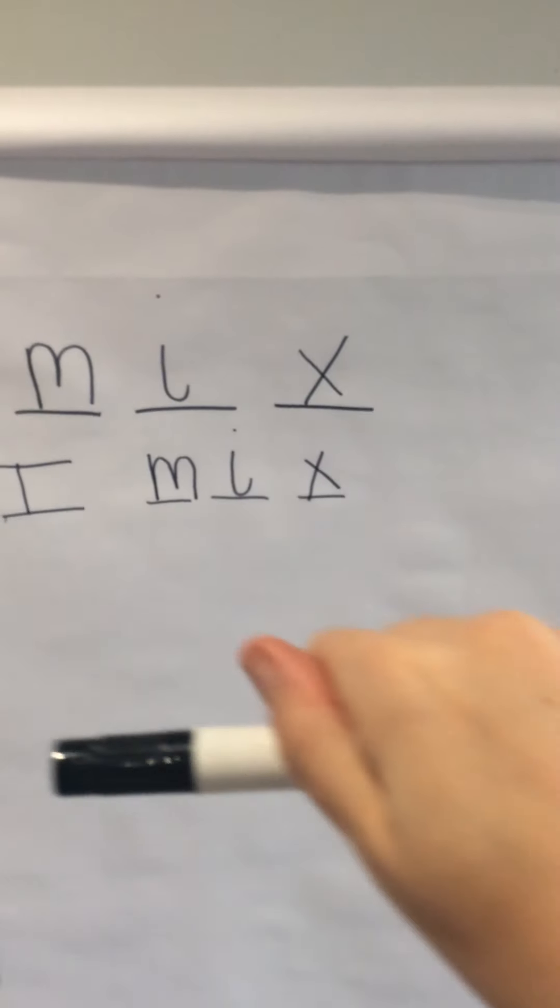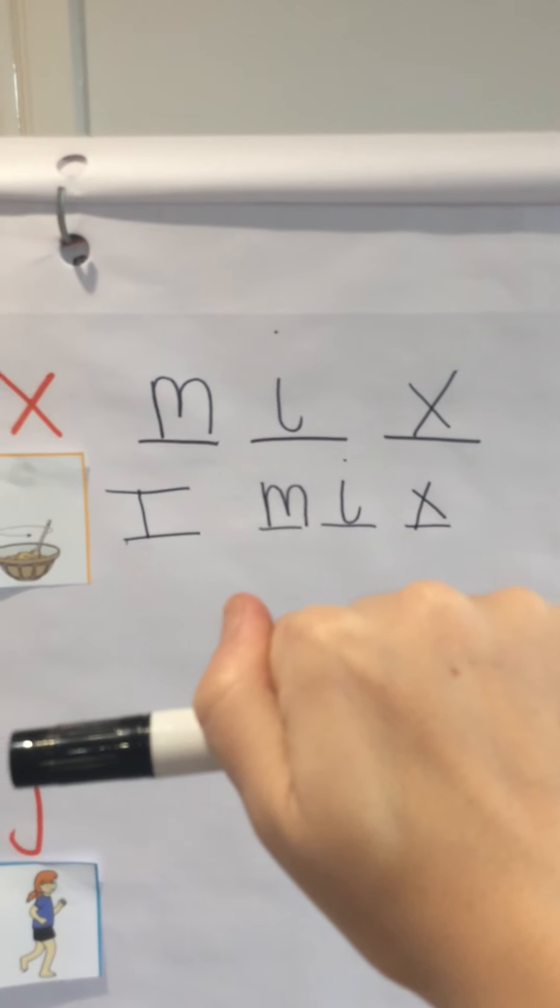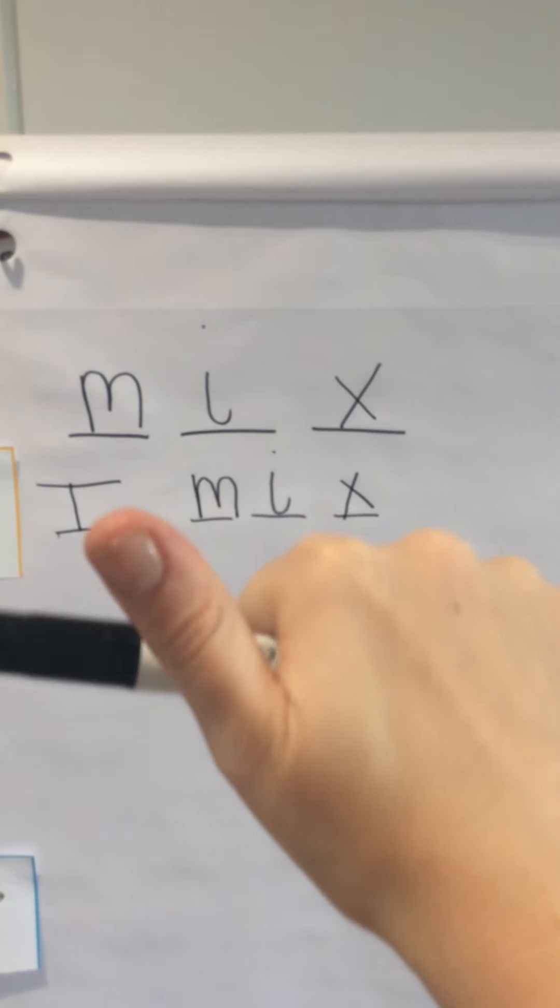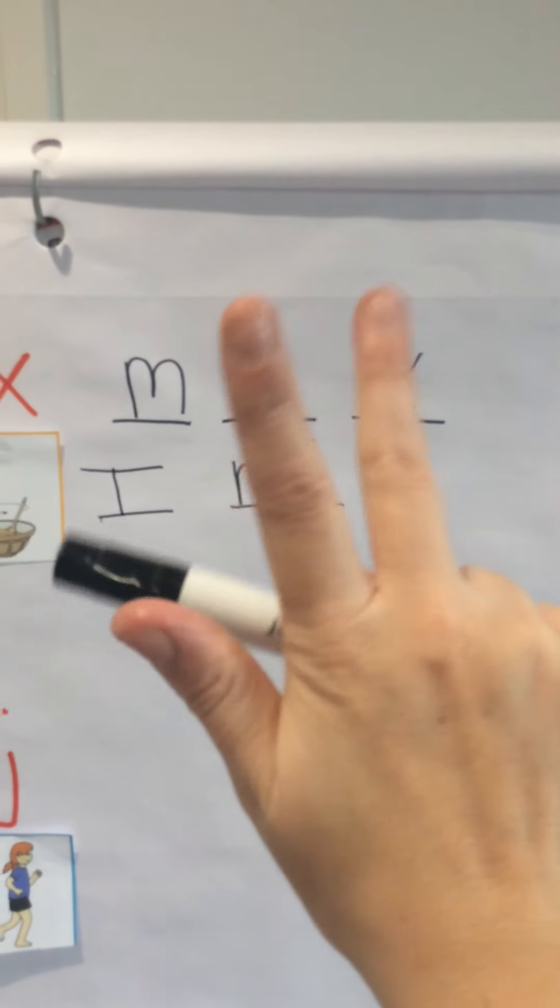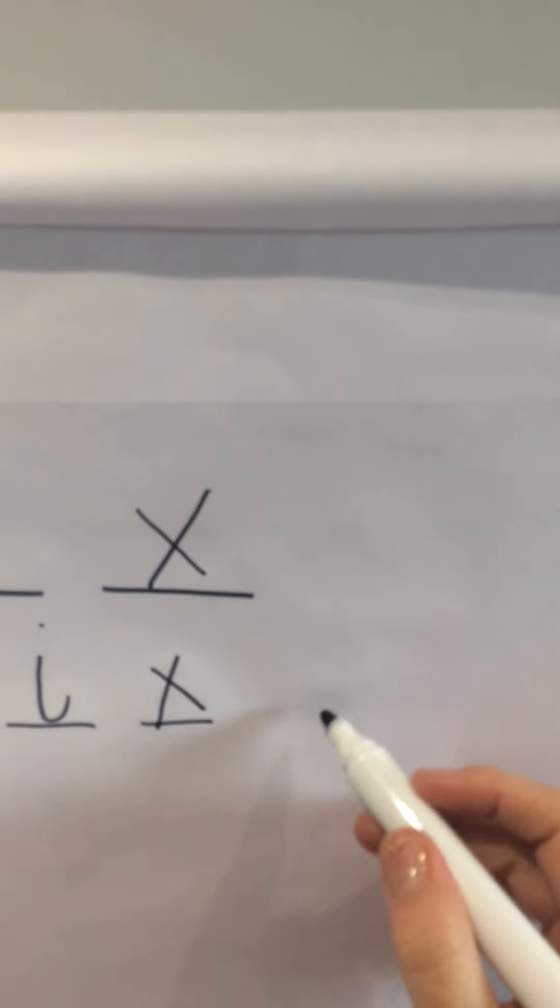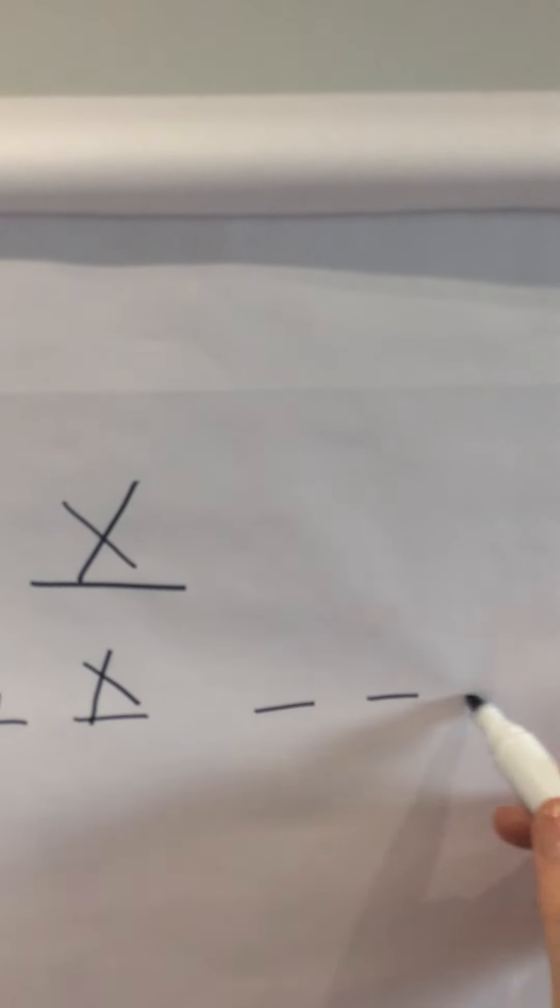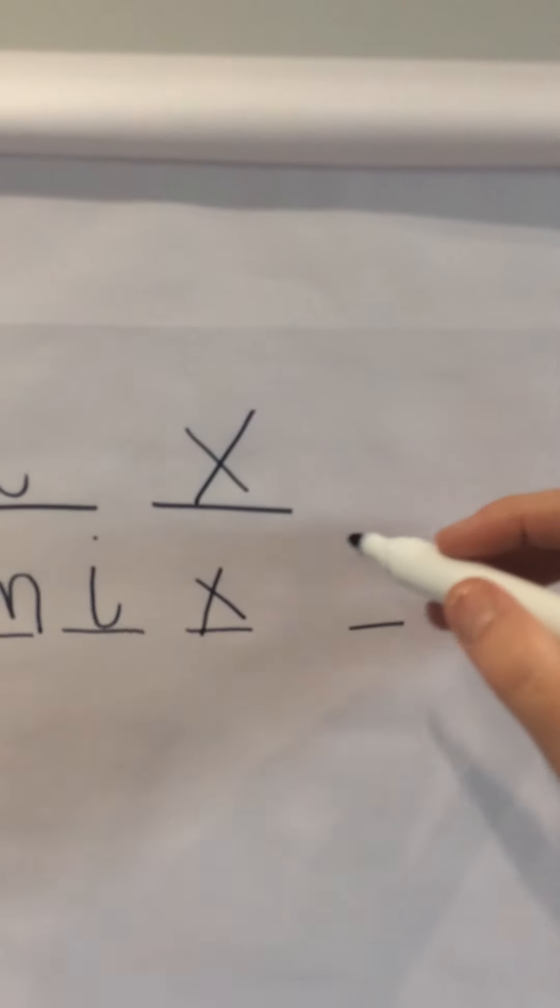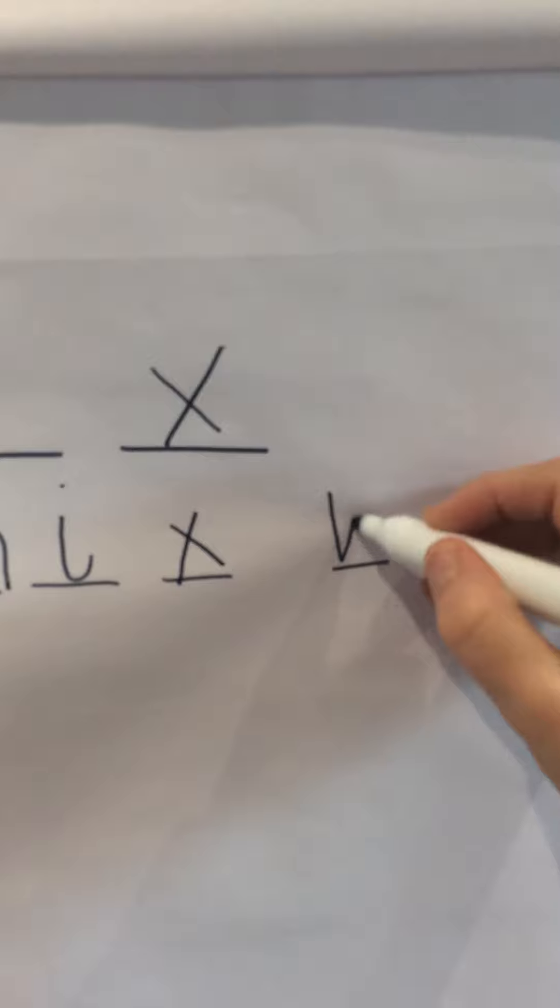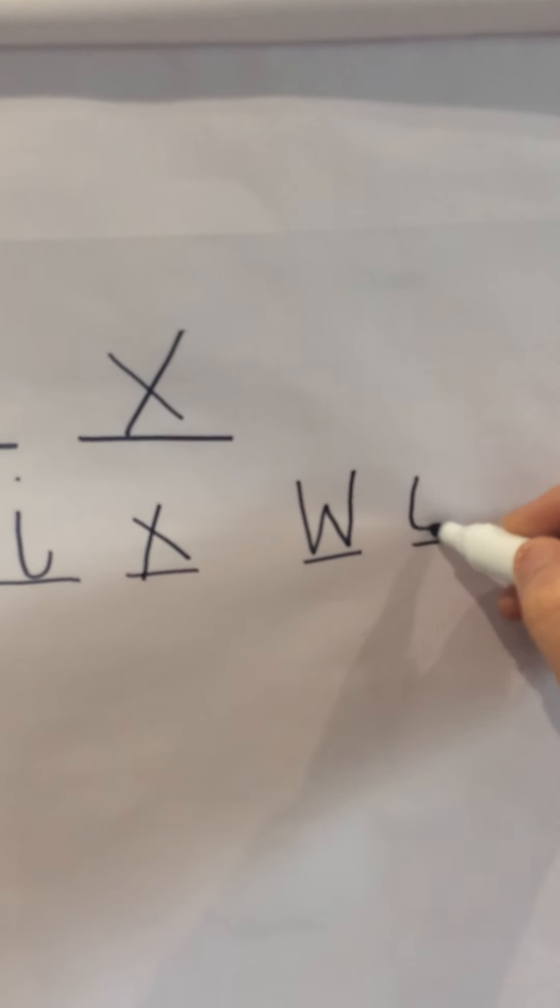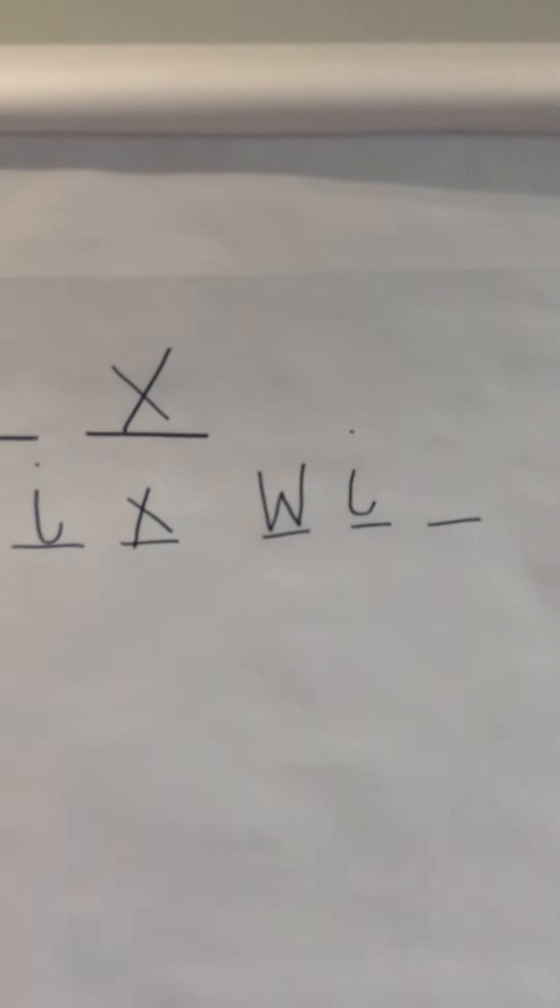With is my next word. So hands up. Show me how many sounds are in with. W, i, th, with. Three. So finger space. One, two, three. First sound in with. W, so down, up, down, up. Next sound in with. W, i, th. So down and curl round and a dot for the top.